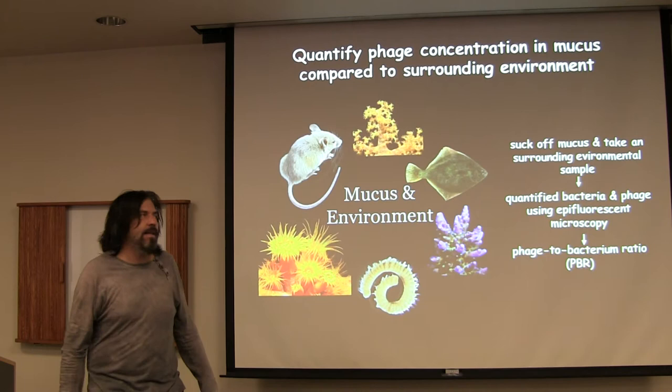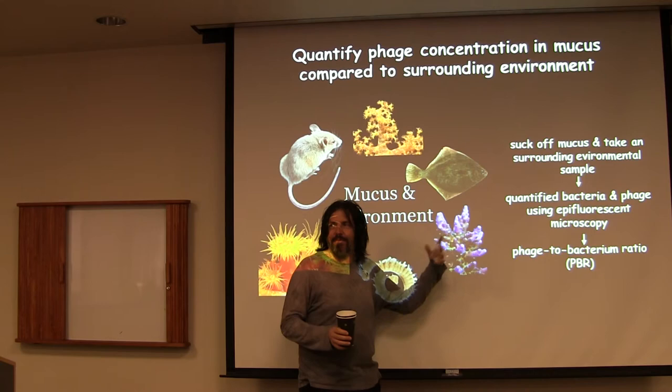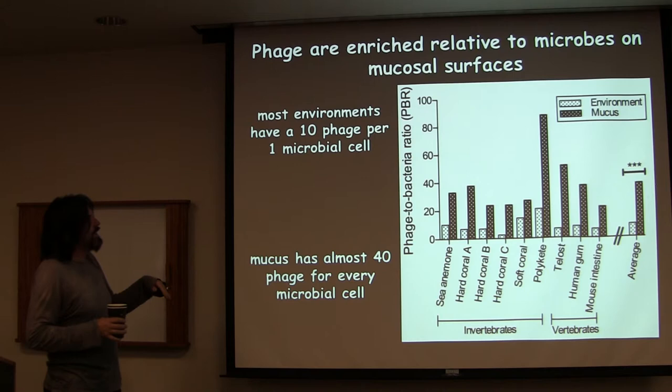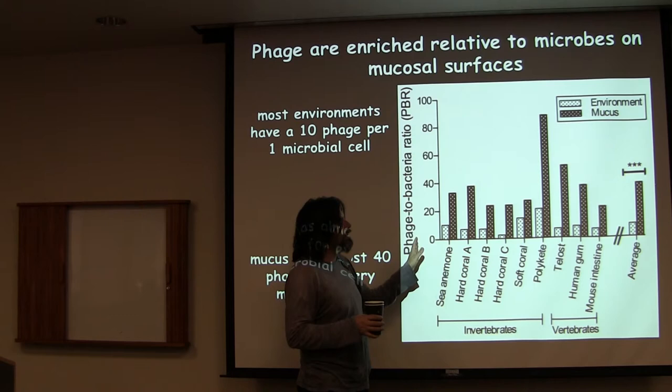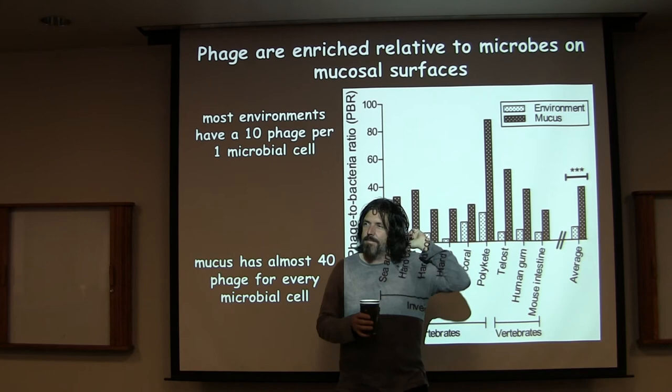Then we went to something simple so that Jeremy could get it to work — basically sucking mucus off and counting viruses. What we find is that there are a lot of viruses on a mucosal surface. Just remember this rule: your phage-to-microbe ratio is always about 10 to 1, varying by environment. This would be the environment ratio, and then on the equivalent mucosal surface — that's what Lauren is following up on, giving us a lot more data. The average is about 35 to 1, so it's always highly enriched on these mucosal surfaces.